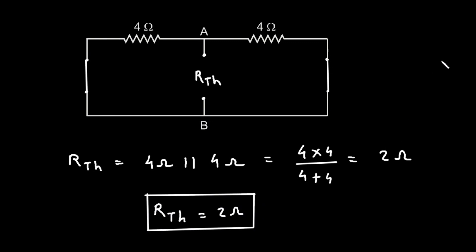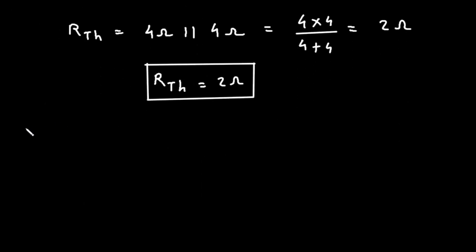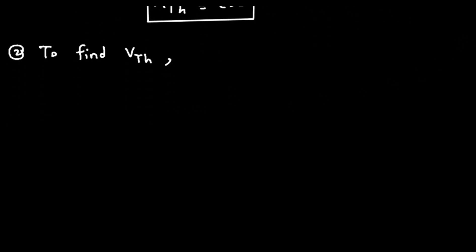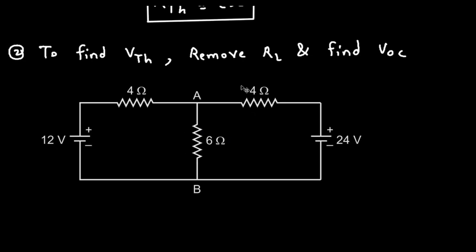The next step is to find the value of VTH. So step number 2 is to find VTH. To find VTH, again we have to remove RL and find VOC — the open circuit voltage. So let's remove this RL. Here we have to find the value of VOC, or we can directly write VTH, because VTH is equal to VOC.